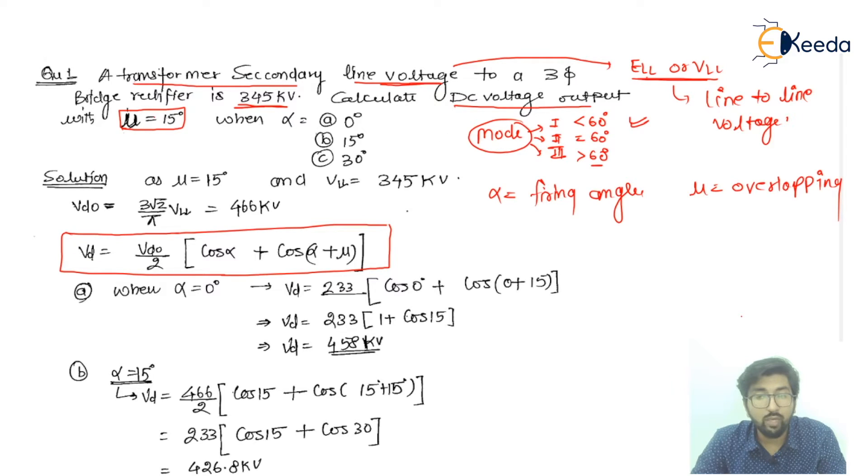Now we will move for the alpha. Alpha is: a is equal to 0 degrees, b is equal to 15 degrees, and c is equal to 30 degrees. It means we are having three cases which are 0 degrees, 15 degrees, and 30 degrees. So now I will start as we have the overlapping angle 15 degrees given and the VLS, that is the line-to-line voltage, is given 345 kilovolts, it is already mentioned.